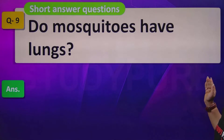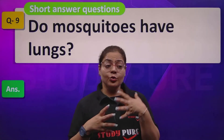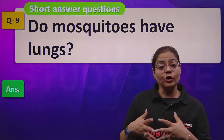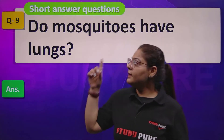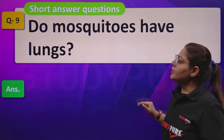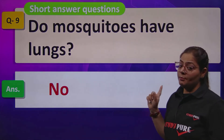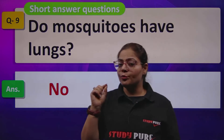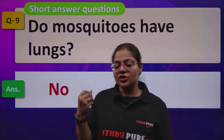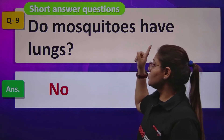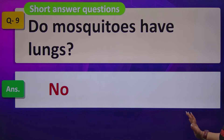Do mosquitoes have lungs? A mosquito may look tiny, but as a living organism, respiration takes place in it too. We learned that insects breathe through spiracles, which are tiny holes in their body. Similarly, mosquito is an insect, and no, it does not have lungs.